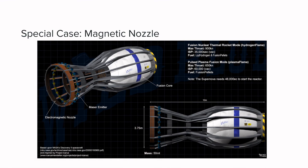In this image, you can see a concept design of a fusion nuclear thermal engine. This engine was designed for NASA's Discovery 2 spacecraft. On this engine, we can see a massive magnetic nozzle.